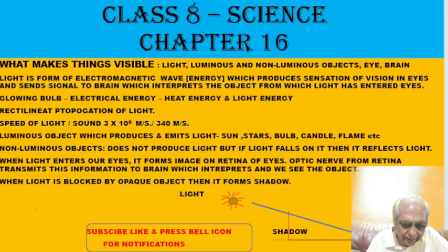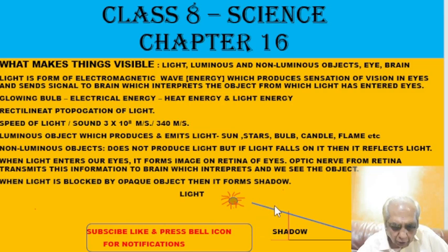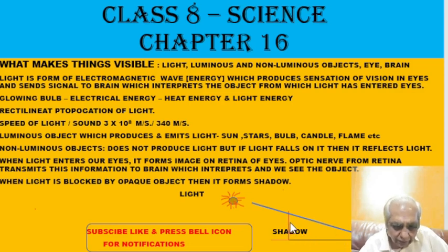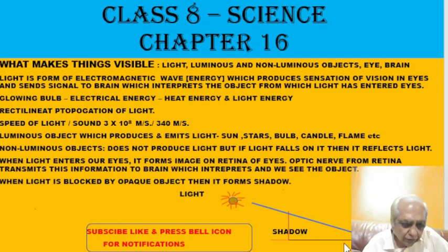If light is blocked by an opaque object — an object through which light cannot pass, like coal or a tree — then because light cannot pass through it, a shadow will form on the other side. Light is able to go above or around the object but not through it. Whenever light is obstructed by an opaque object, it forms a shadow.